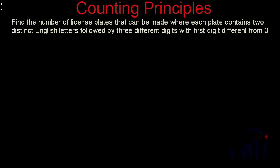Here we have one more problem based on counting principles. The problem statement says: find the number of license plates that can be made where each plate contains two distinct English letters followed by three different digits, with the first digit different from zero.